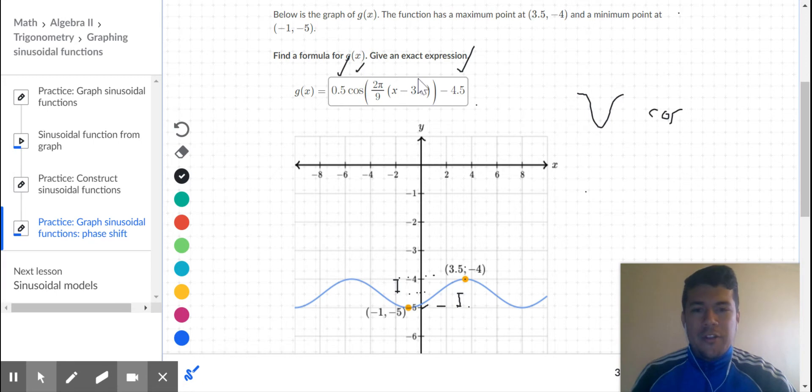So I decided it was going to be a cosine function. But again, you could pick cosine or sine depending on which point you're starting with. I want my starting point to be 3.5 comma negative 4. Next, I had to think about my b value.